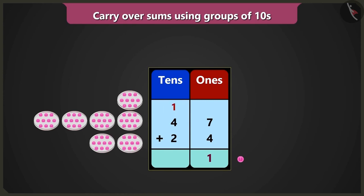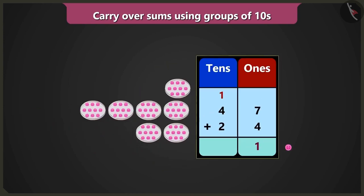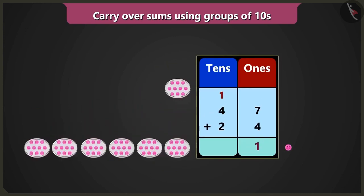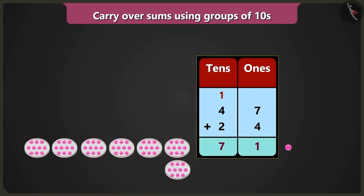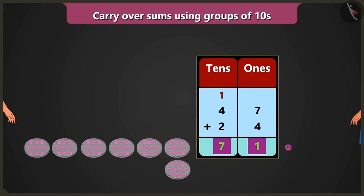Now in the box of tens, 4 tens added to 2 tens will give us 6 tens. Now 6 tens added to the carry over 1 ten will be a total of 7 tens. So this way there are a total of 7 tens and 1 one, which means there are 71 buttons. So 47 added to 24 will be 71.